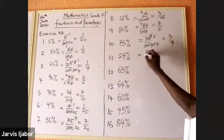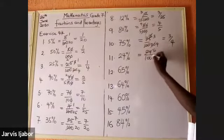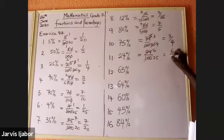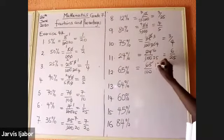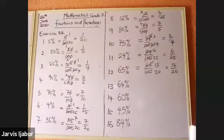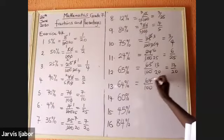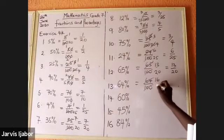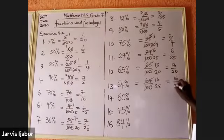24 over 100: 4 goes into 24 six times, 4 goes into 100 twenty-five times — that's 6 over 25. 65 over 100: 5 goes into 65 thirteen times, 5 goes into 100 twenty times — that'll be 13 over 20. 64 over 100: 4 goes into 64 sixteen times, 4 goes into 100 twenty-five times — that's 16 over 25.